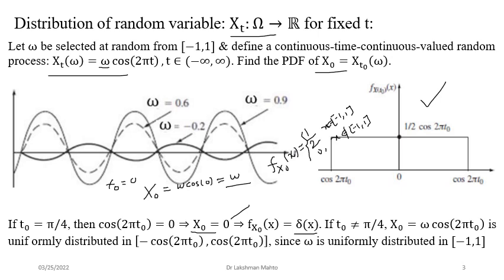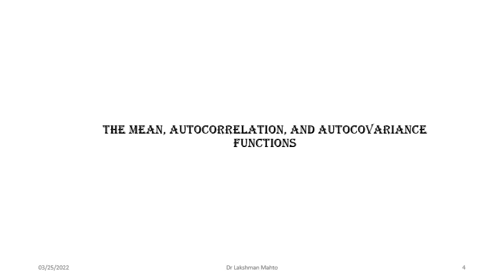Since omega is uniformly distributed from minus one to one, X(t_0) is also uniformly distributed, with the interval modified by the factor cosine(2*pi*t_0). That is the correction from the last lecture — the distribution of X(t_0) for t_0 = pi/4 was not computed before. Now we proceed to the main topic: the mean and central representation of a random process, including mean function, autocorrelation function, and autocovariance function.